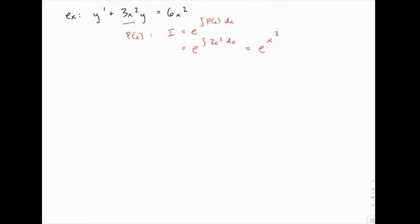Now what do we do with this integrating factor? We multiply it on both sides of the equation. So we'll have e to the power of x to the third times y prime plus 3x squared e to the x cubed times y equals 6x squared e to the x cubed.